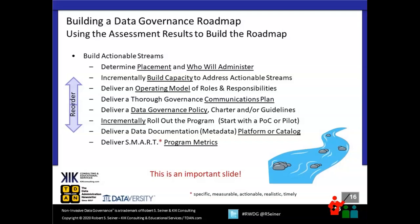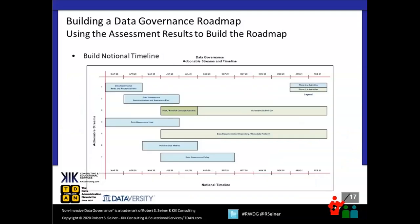These recommendations have been reordered into actionable streams. You want to do the most important things first — determining who's responsible for governance and where it resides, getting the necessary people, then roles and responsibilities, communications, and perhaps delivering a policy. This is where we start putting them in order of what needs to happen. A notional timeline depends on when you start and when you think you'll finish the actions associated with each actionable stream in your data governance roadmap.